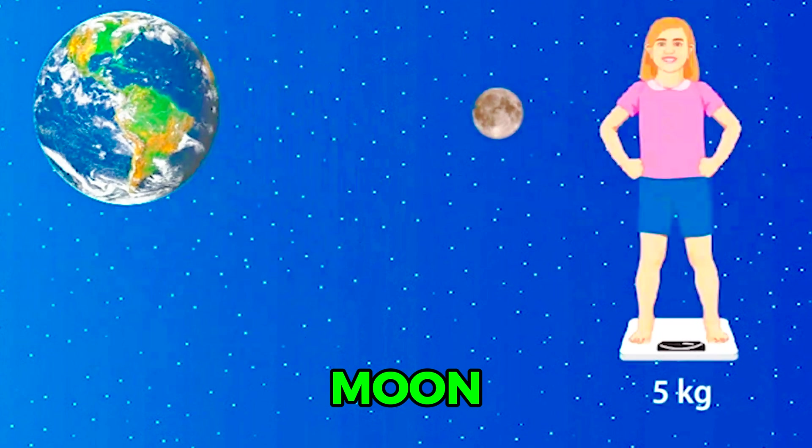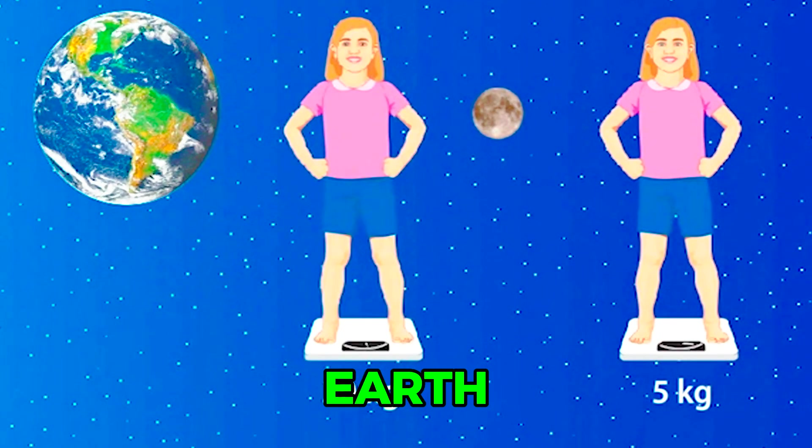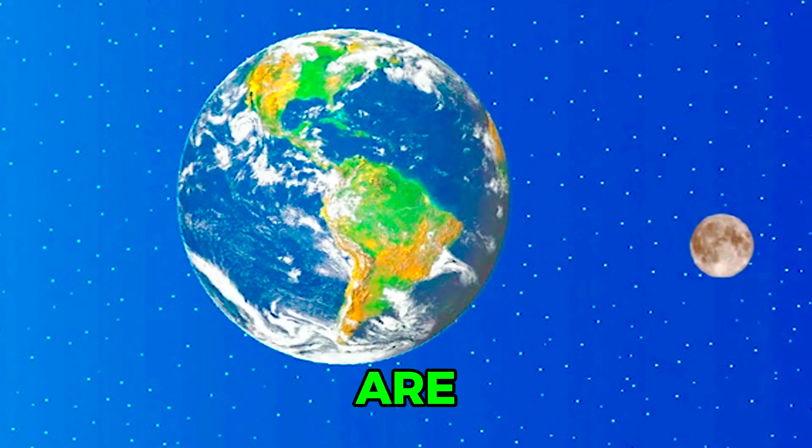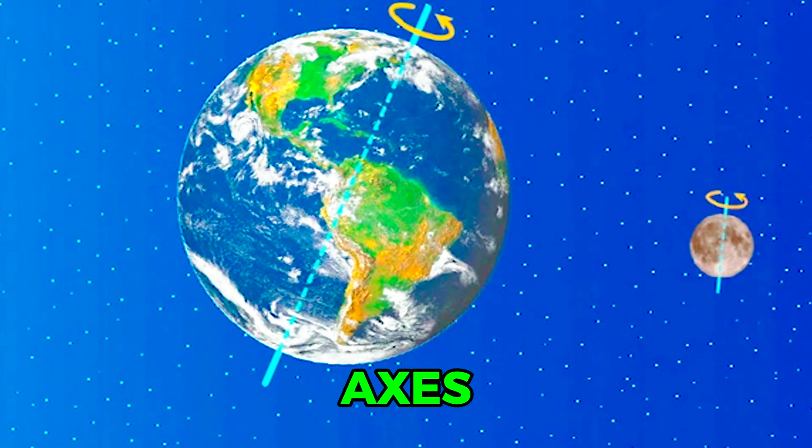On the Moon, you would weigh about one-sixth of your weight on Earth. Inertia is the tendency of an object to resist change once it is in motion. An object will stay in motion at a constant speed and direction unless it is acted on by another force. The Moon and the Earth are in constant motion as they rotate on their axes, and therefore they have inertia.